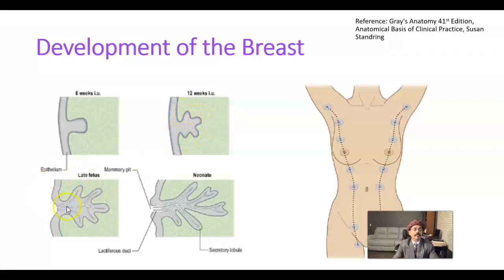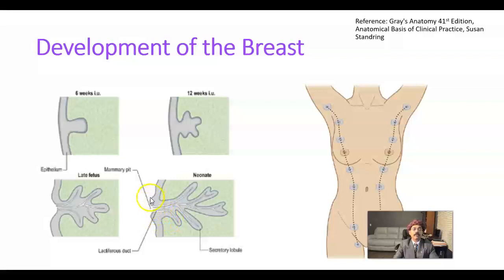In the late fetus there will be sinus formation and branching of the solid sprout. There will be canalization, and at birth the newborn will get a mammary pit. Then eventually there will be proliferation of the mesoderm around the pit, which will lead to the formation of the nipple.